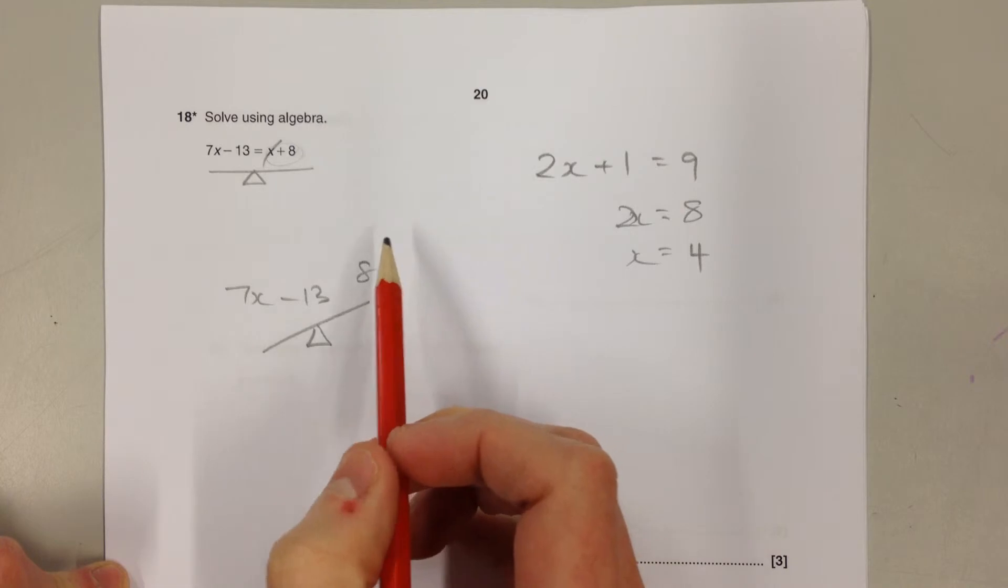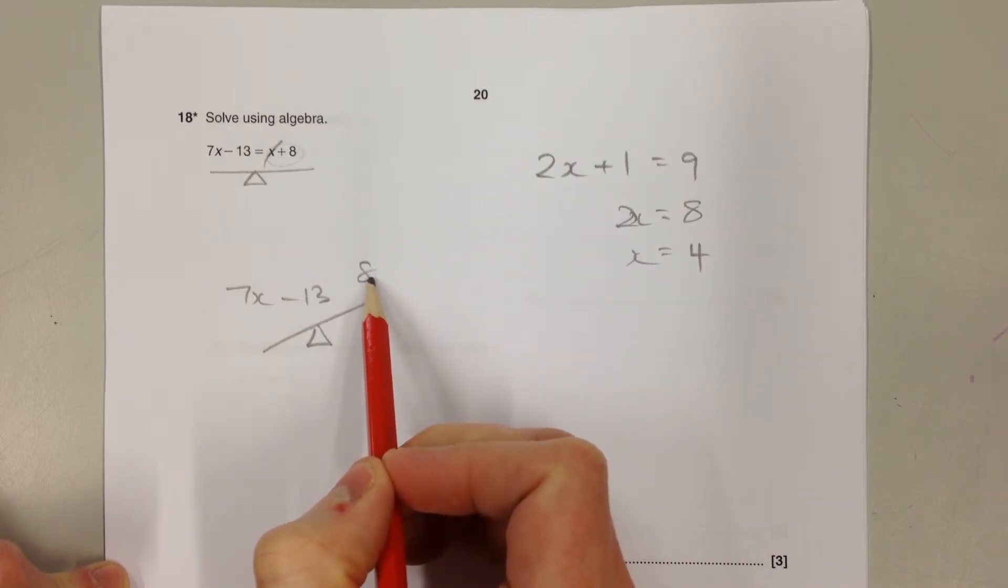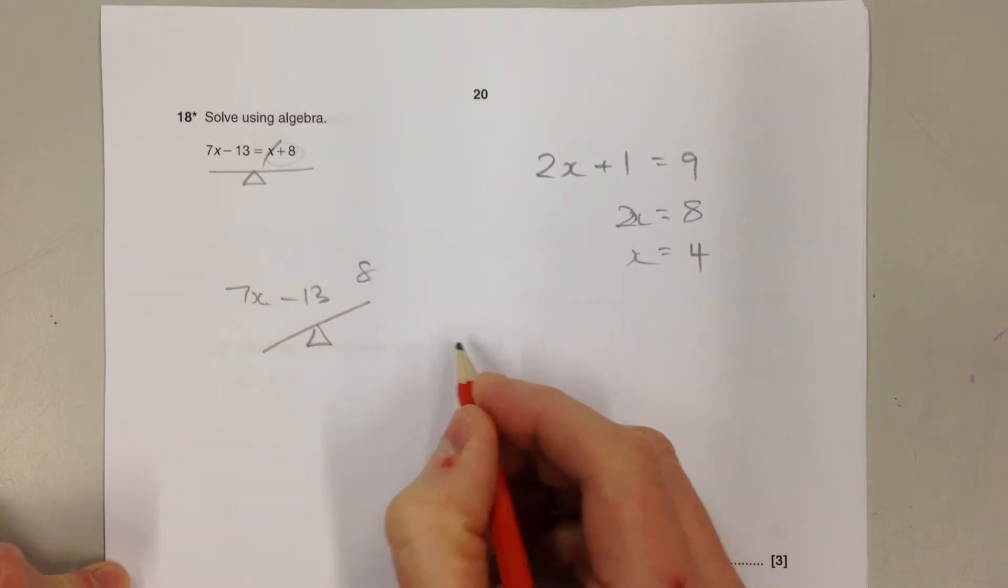We took 1x away from over here, so we can balance things up by taking 1x away from over here.